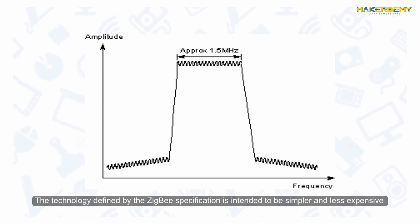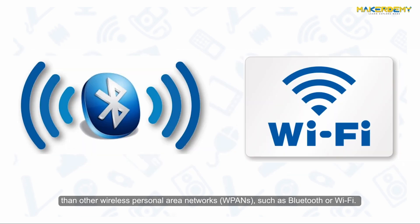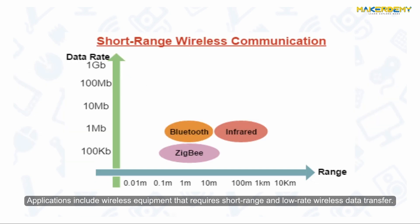The technology defined by the Zigbee specification is intended to be simpler and less expensive than other wireless personal area networks such as Bluetooth or Wi-Fi. Applications include wireless equipment that requires short-range and low-rate wireless data transfer.